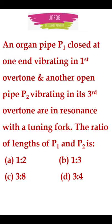So if a closed end pipe p1 is vibrating in first overtone and an open pipe p2 is vibrating in its third overtone in resonance, we have to find the ratio of lengths of p1 and p2.